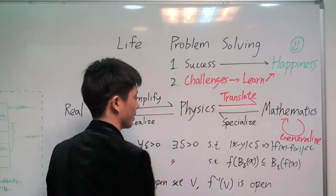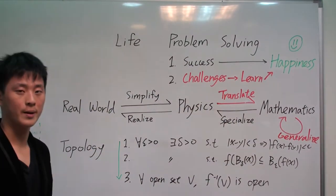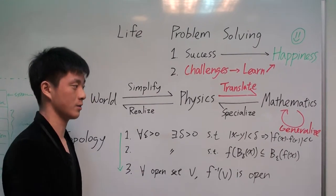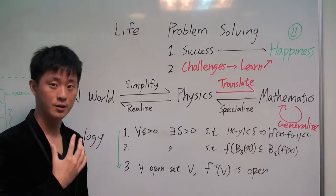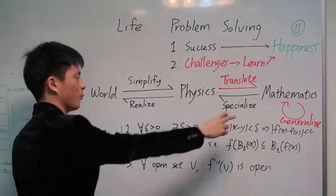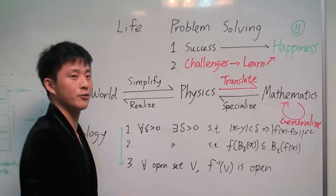So, we translate into mathematics, a language, a perspective that is flexible enough, that we can generalize, we can create homomorphism, isomorphism, that you can link things together. And then we can go back, specialize to physics.